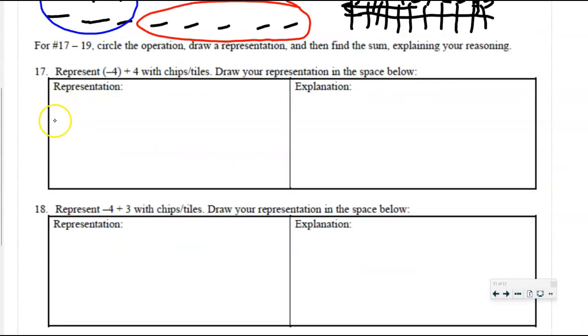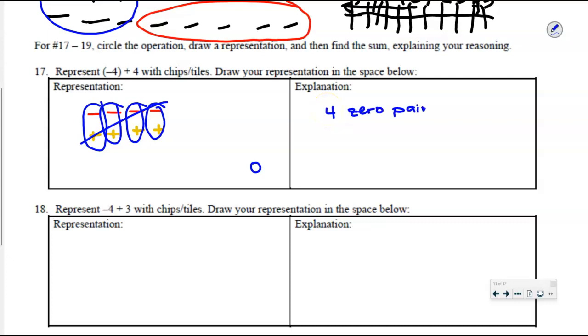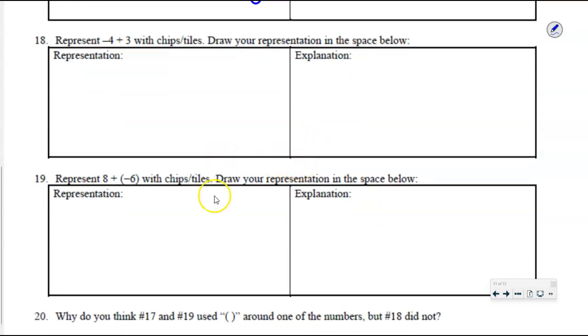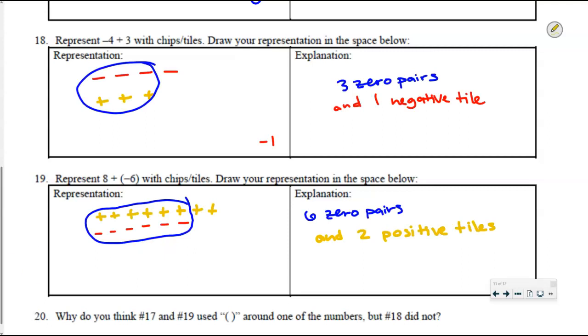Moving right along. The next set of problems ask us to make our own models. We have some experience with this, so we can go through this pretty quickly. If I need you to represent negative four plus four with chips and tiles, then I need to start by drawing four negative tiles. And with that, I'm going to combine these four positive tiles. When I combine those, I can see these will zero out. So negative four plus four is equal to zero. And the explanation is I end up having four zero pairs. Pause the recording and give the remaining ones a try, 18 and 19. Only continue when you have these ones done. Let's take a look. The answers are about to appear. Take a look. See how you did.